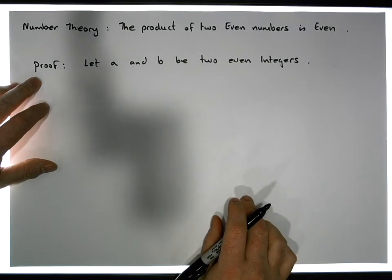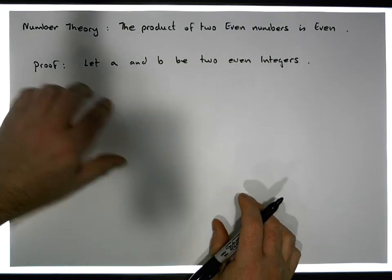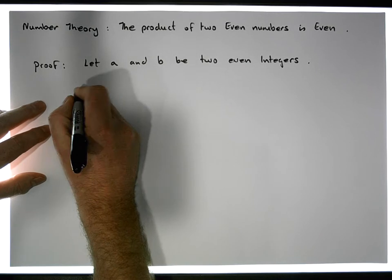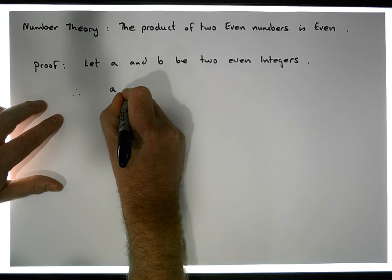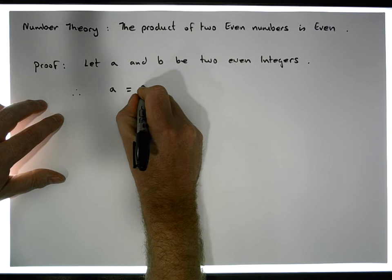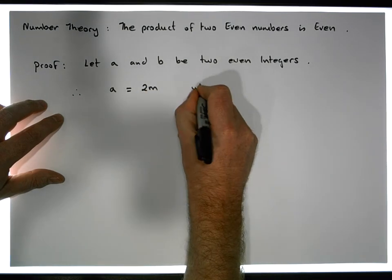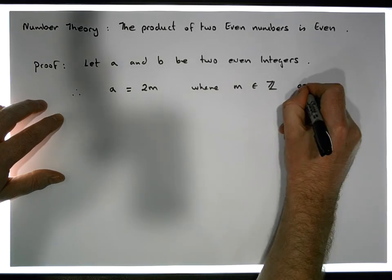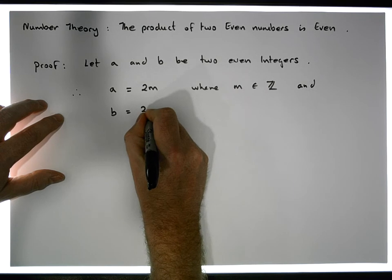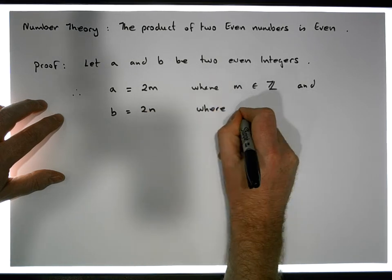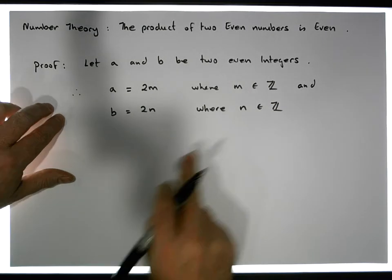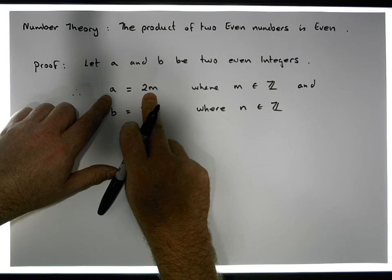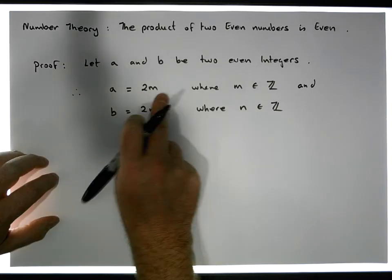Based on the division algorithm, what do we know about these two even integers? We know that they can be represented as a product of two numbers with a zero remainder. Therefore, A must be equal to 2 times some other number M, where M is an element of the integers. And B must also be equal to 2 times some other number N, where N is an integer. Because that's the definition of what it means to be even - when we divide, we can divide the number by 2 with zero remainder. That's a consequence of the division algorithm.